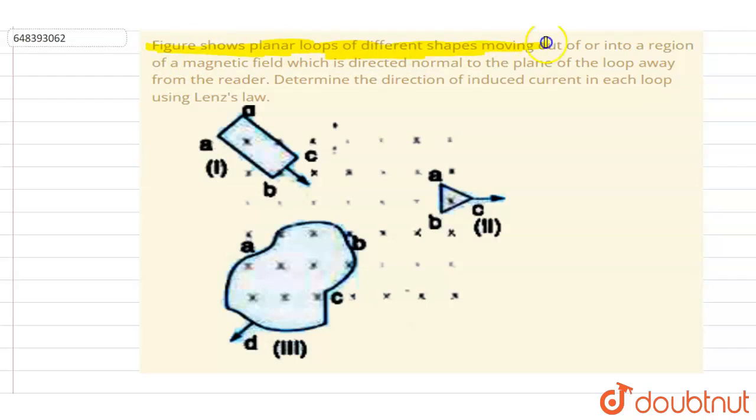Hello everyone. Figure shows planar loops of different shapes moving out of or into a region of magnetic field which is directed normal to the plane of the loop away from the reader. Determine the direction of induced current in each loop using Lenz's law.